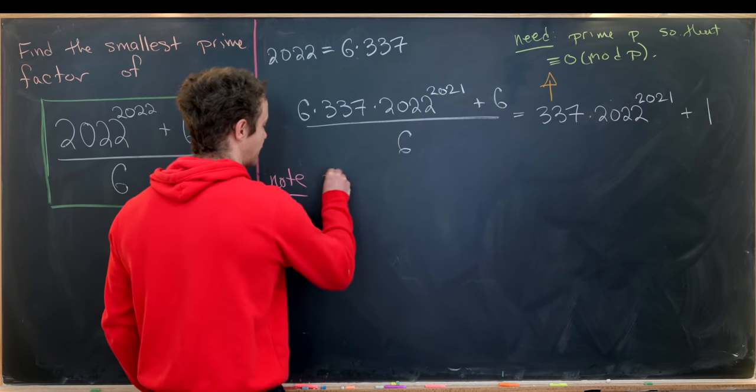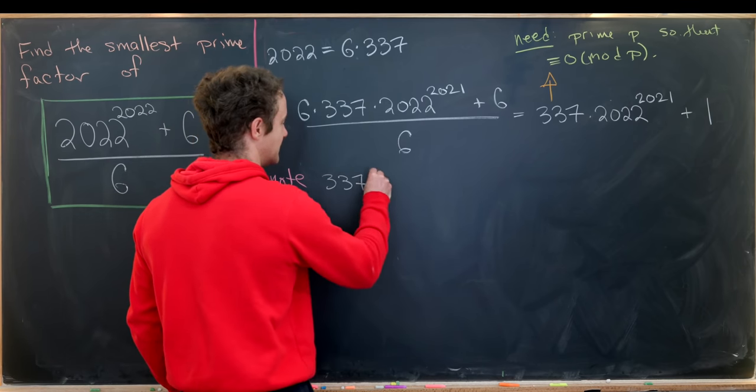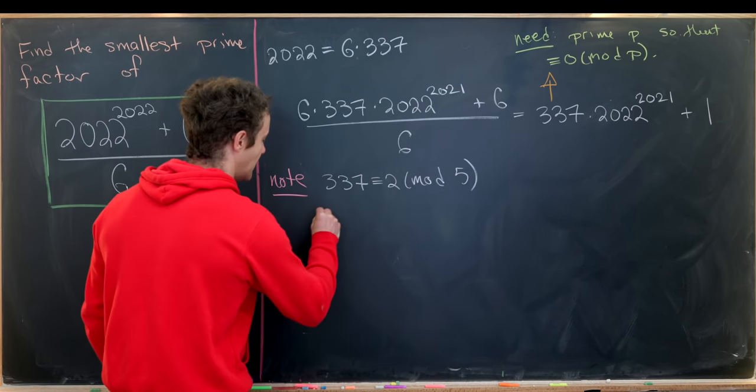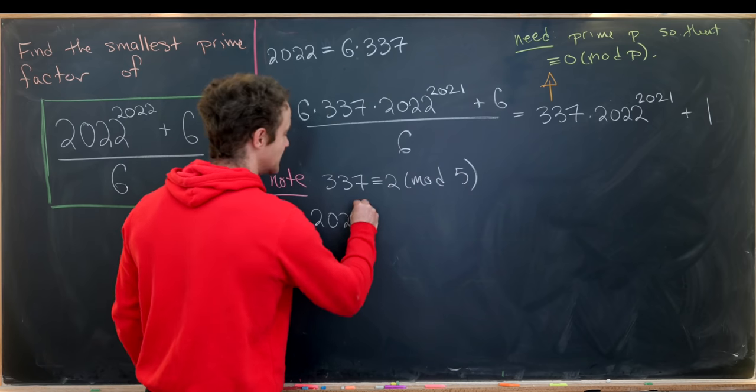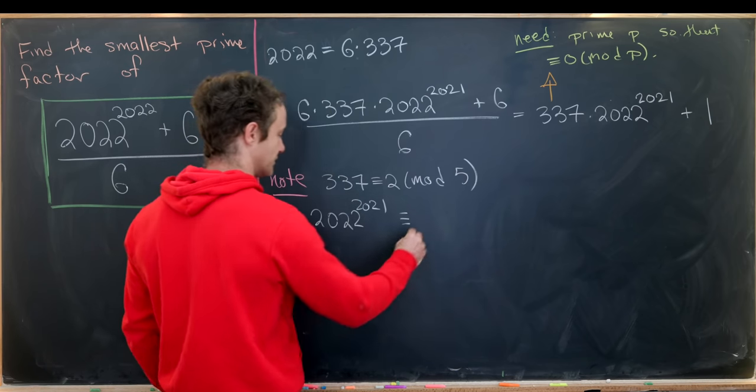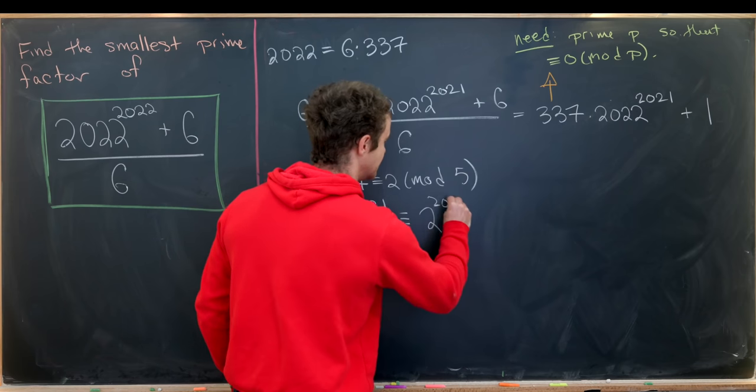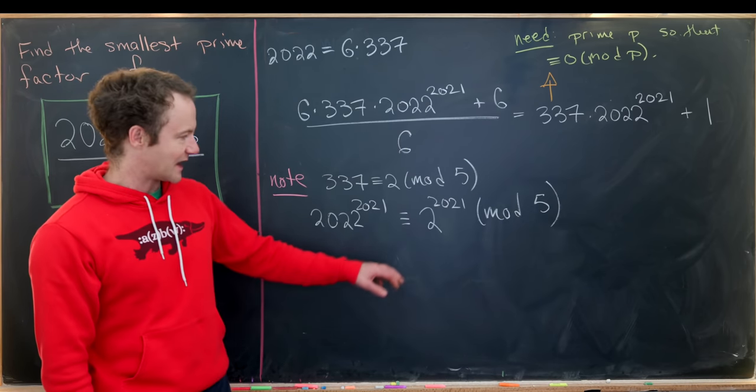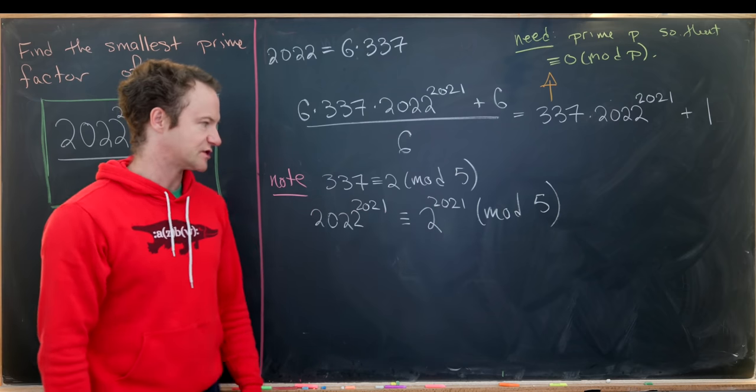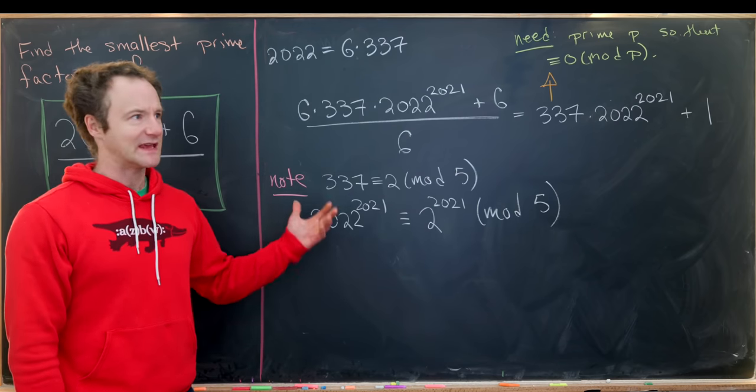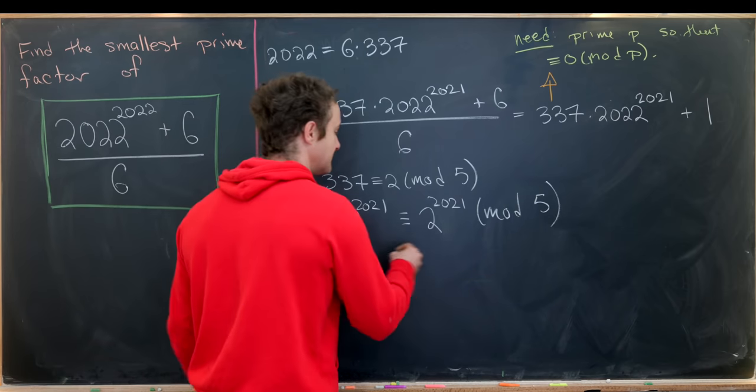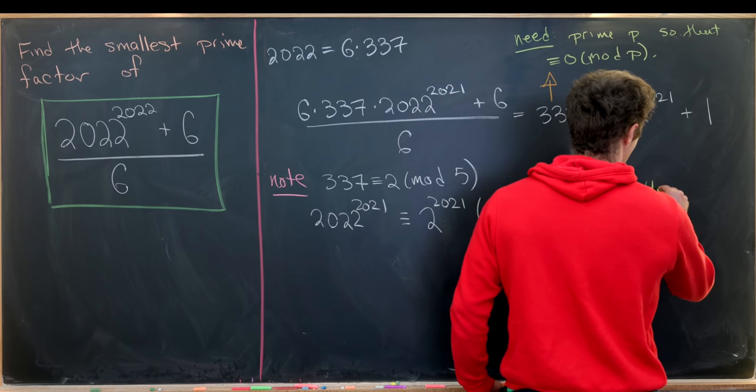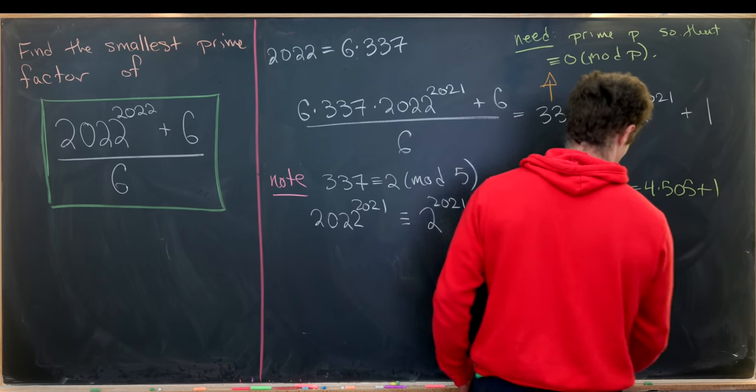And let's make the following observations. So we'll notice that 337 is congruent to 2 modulo 5. And then 2022 to the 2021 will be congruent to 2 to the 2021 modulo 5. But that's still a little bit problematic because we need to find the 2021st power of two. But now we can hack Fermat's little theorem to make this work.